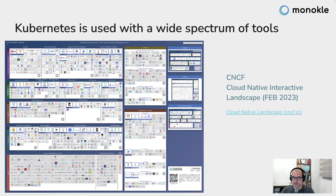Kubernetes has a wide spectrum of tools — there are more than 2,000 tools that you can use. Think of Kubernetes as one thing, but actually there are a lot of components in different places that need to be put together. That's why you have so many certified distributions and different ways of doing the same thing. Writing configuration for applications in Kubernetes is a complex process, and it's prone to errors.